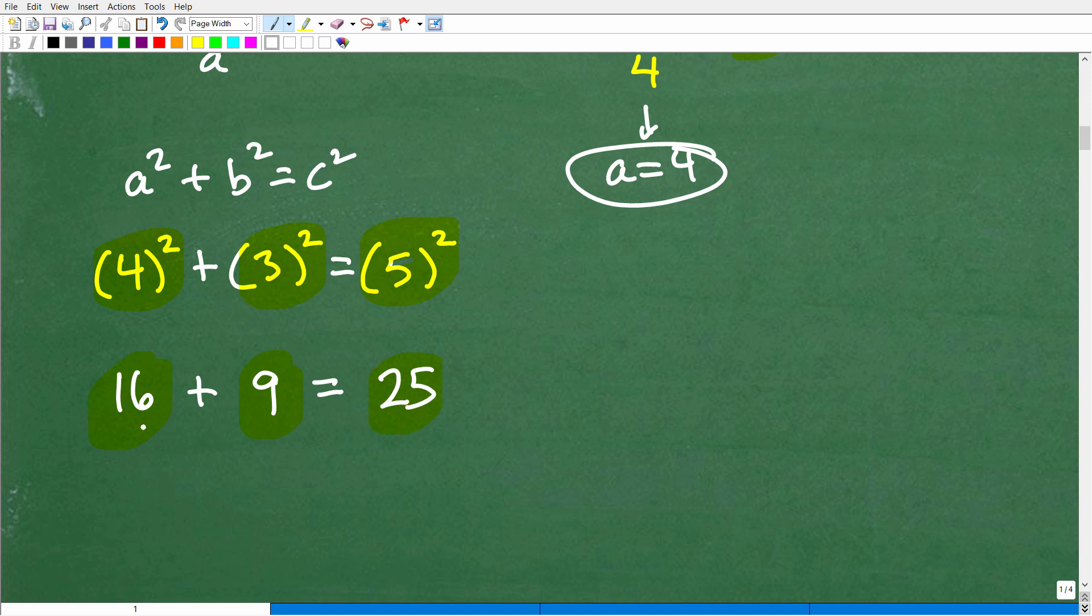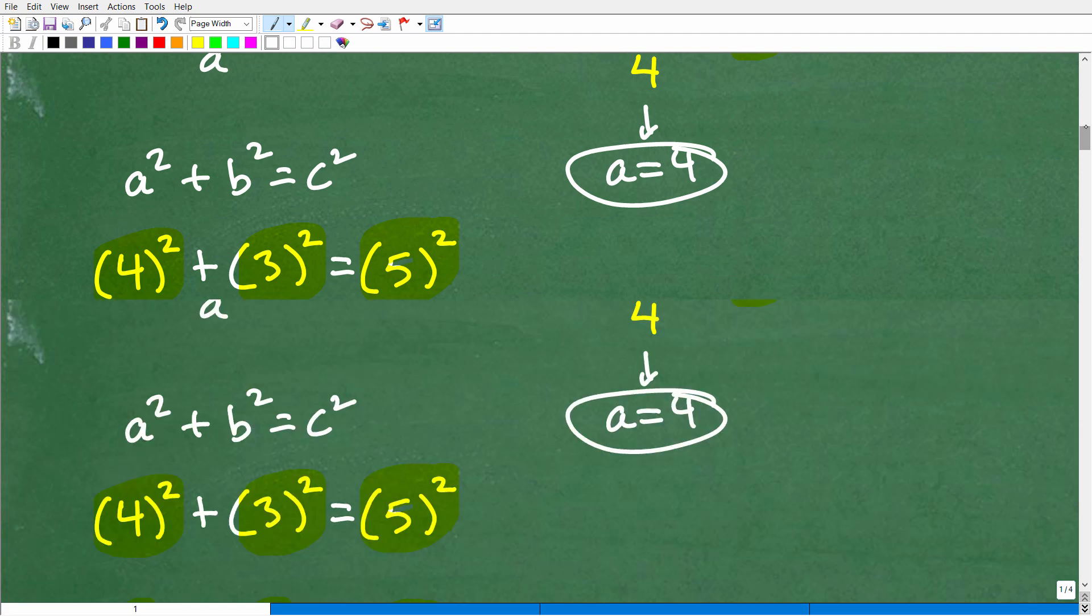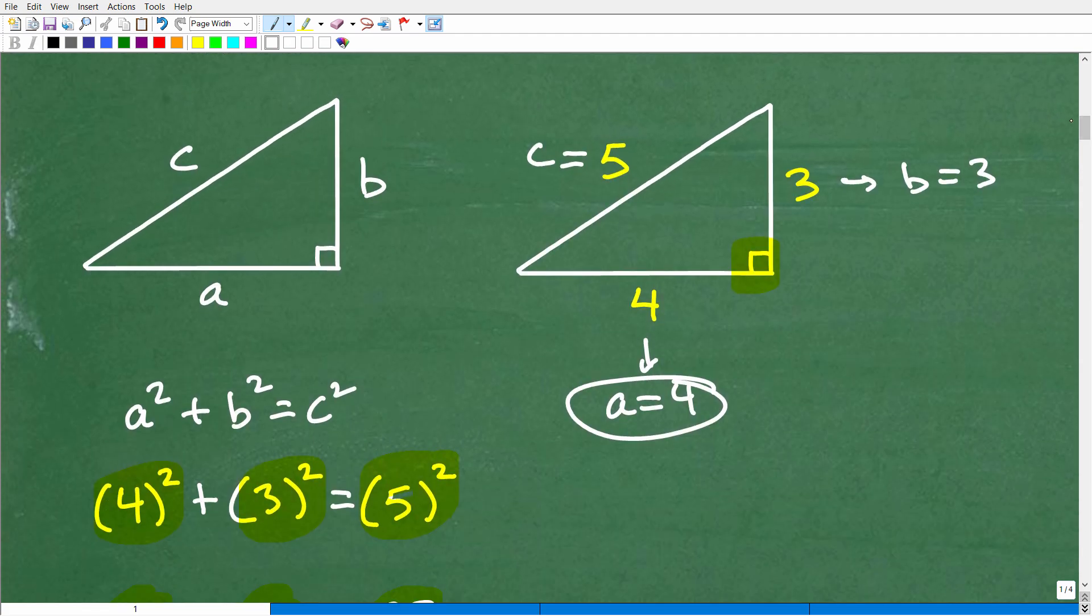So is this true? 16 plus nine is what? That's 25. So 25 is equal to 25. It definitely worked out. It is true. So you're always going to have that true relationship when you have a right triangle. You have this very special relationship between the lengths of the sides of a right triangle.